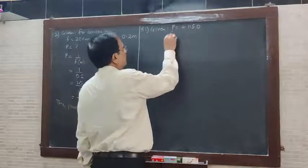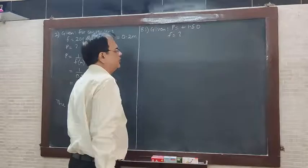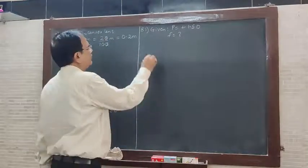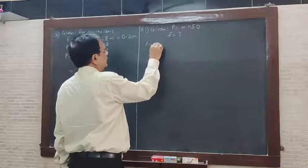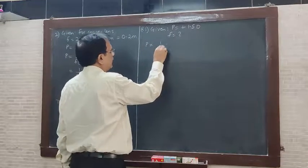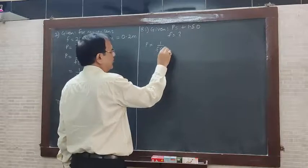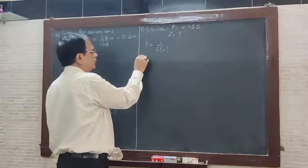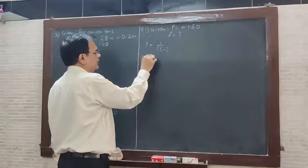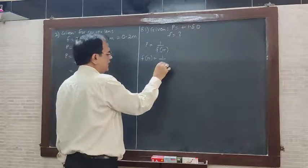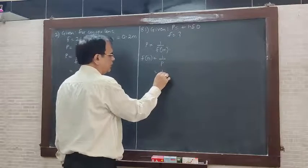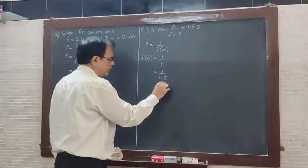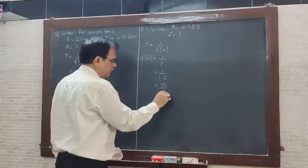We have to find out F. To find F, we write the formula: P is equal to 1 upon F in meters. Rearranging, F equals 1 upon P. So F meters is equal to 1 upon 1.5. We remove the decimal point: 10 upon 15.